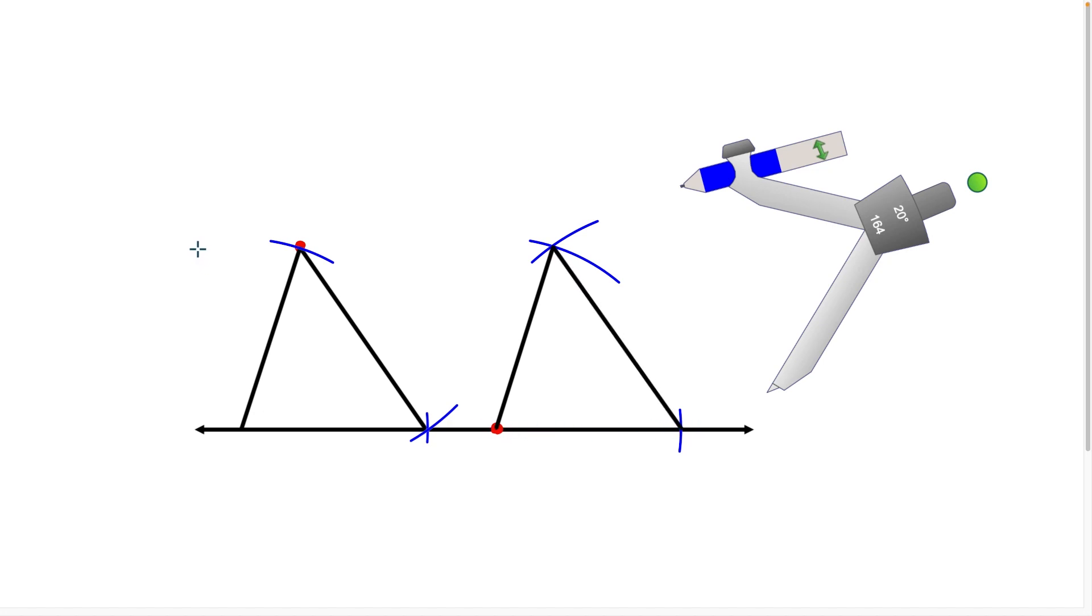So now the last step here is just to connect these two points across the top. And what we have here is that this line that I just constructed here is going to be parallel to the original. So I could throw arrows on this and name the lines. Now the conclusion, once again, is that line L is parallel to line M.